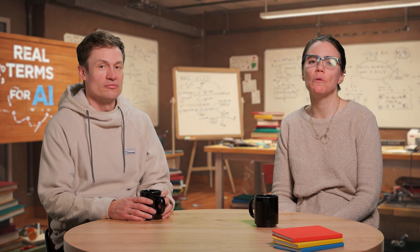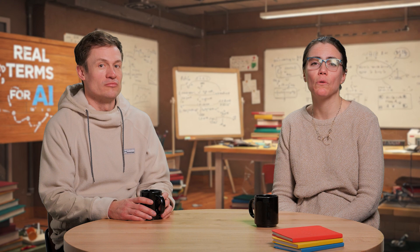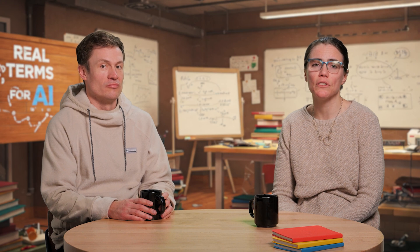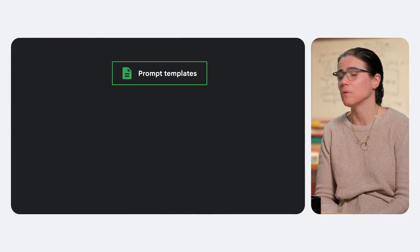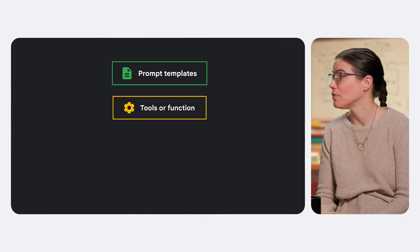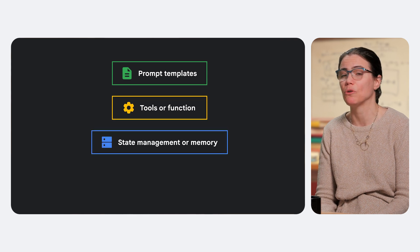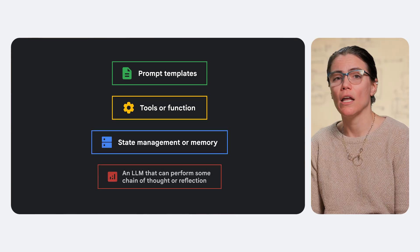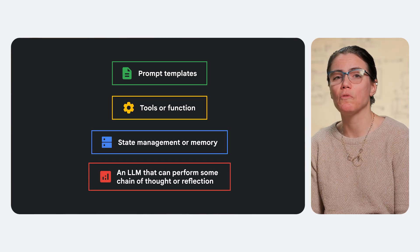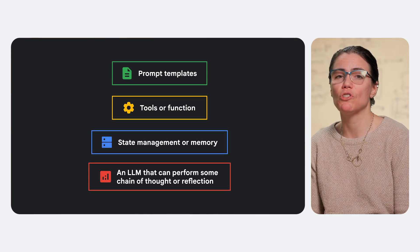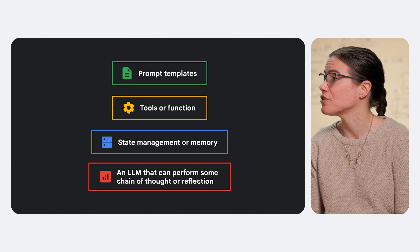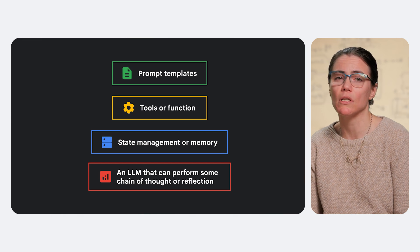There are a few things we would typically do in order to create a conversational agent. At a high level, the agent would need things like prompt templates, tools or functions to do stuff, state management or memory, and an LLM that can perform some chain-of-thought or reflection-type capabilities.